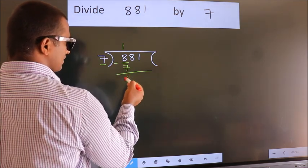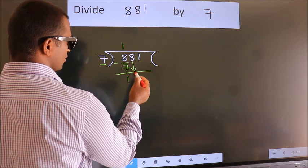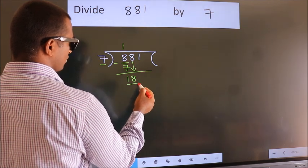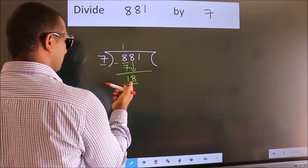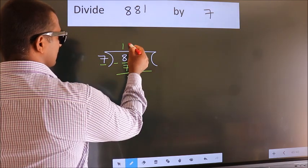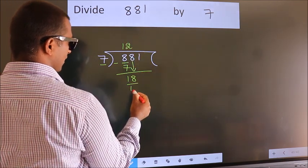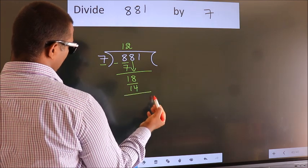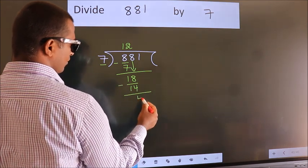After this, bring down the beside number. So, 8 down. So, 18. A number close to 18 in 7 table is 7 2s 14. Now, we subtract. We get 4.